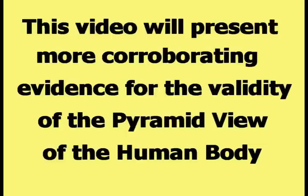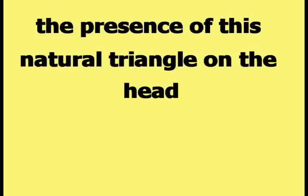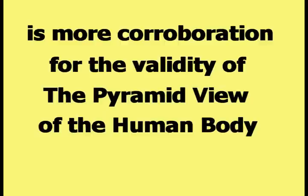This video will present more corroborating evidence for the validity of the pyramid view of the human body. Please examine this picture of a real life human being. There is a clearly defined triangular shape on the man's head. The base of the triangle runs along the area between the man's forehead and the top of his head, and the sides of the triangle rise up to the point at the top of the man's head. According to Happy Theory, the presence of this natural triangle on the head is more corroboration for the validity of the pyramid view of the human body.